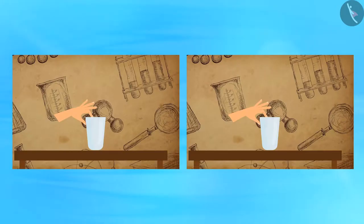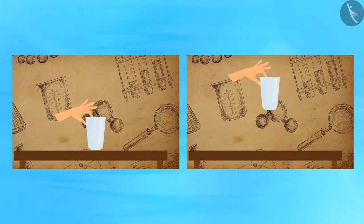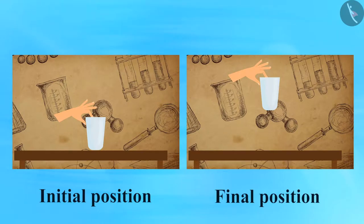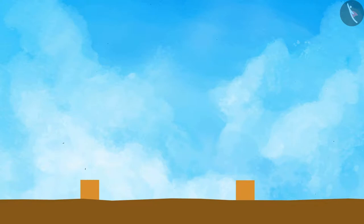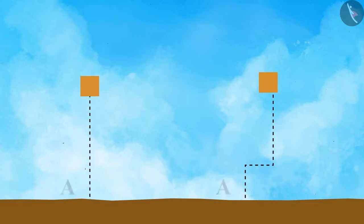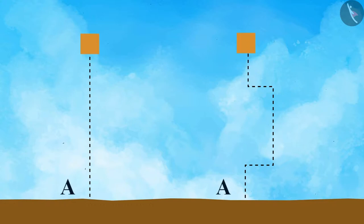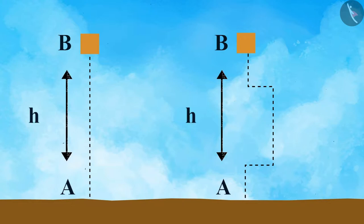When an object is raised to a certain height, the work done depends on the difference between the vertical heights of the initial and final positions of the object, and not on the path taken by the object. Looking at two images where two objects take two separate paths to reach from position A to position B: here AB equals h in both cases, and the work done on both objects is mgh.